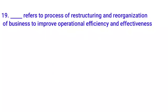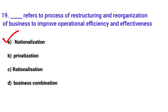Nineteenth MCQ: 'Dash refers to the process of strategic restructuring and reorganization of business to improve operational efficiency.' Options include nationalization — taking private companies under government control — that is not the answer. Option B: privatization — converting government-owned companies into private — also not the answer.